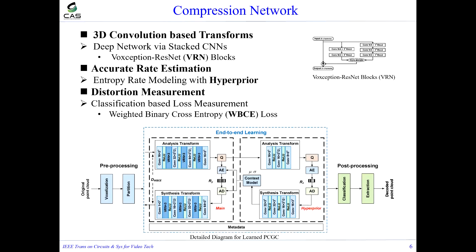The compression network is based on stacked 3D convolutions for encoder and decoder transforms. We design a deep network with overlapping residual network blocks as the basic unit, which better explores correlations across voxels. The latent representation learned from the autoencoder is then quantized and entropy encoded. To achieve more accurate bitrate estimation, we use an entropy model with hyperpriors. The hyperprior is learned from a hyperautoencoder.